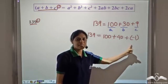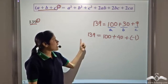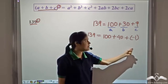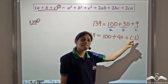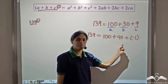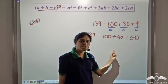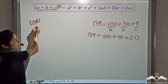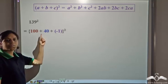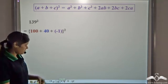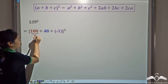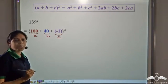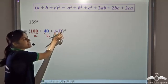100 plus 40 plus negative 1 gives us 139. Multiplying with negative 1 and finding the square of negative 1 is much simpler than multiplying with 9. So if we use these values as a, b, and c, our calculations become even easier. So let us represent 139² as (100 plus 40 plus negative 1)². Here 100 is a, 40 is b, and negative 1 is c — remember, it's negative 1, not 1.